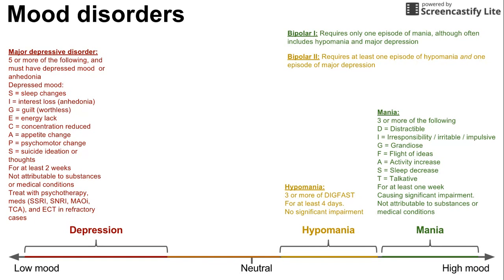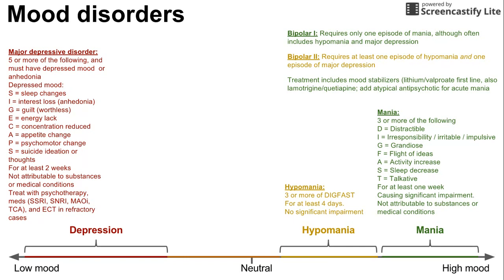Bipolar 2 really does have two poles, while bipolar 1 only requires that single manic episode. Treatments for bipolar disorder include mood stabilizers such as lithium, valproic acid (valproate), lamotrigine, and quetiapine. You also want to add an antipsychotic if a person is acutely manic — for example, if someone comes into the ER with flight of ideas, excessive talkativeness, and inability to sleep, you can add an atypical antipsychotic for acute mania.